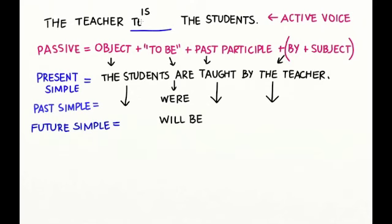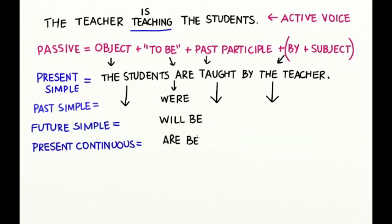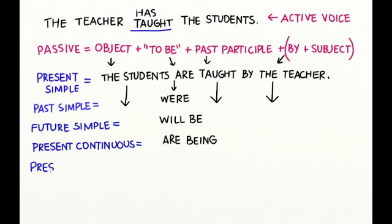And now the present continuous tense: the teacher is teaching the students. In passive voice, this sentence is: the students are being taught by the teacher. And now the present perfect tense: the teacher has taught the students. In passive voice, we say: the students have been taught by the teacher.